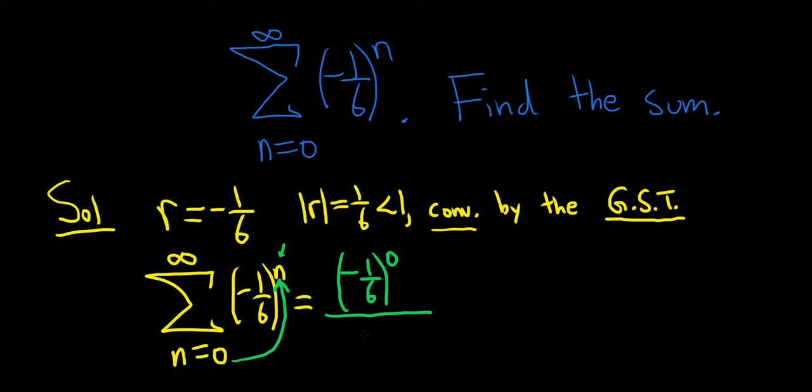Then on the bottom, you always do one minus r. So in this case, it's one minus, and then your r is negative one-sixth. Just like that.